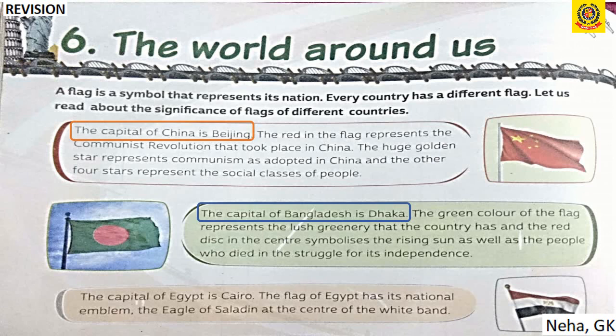The capital of Egypt is Cairo. The flag of Egypt has its national emblem — the Eagle of Saladin — at the center of the white band.